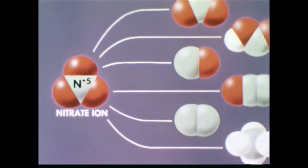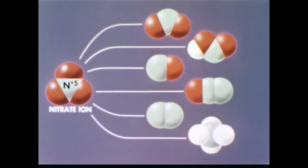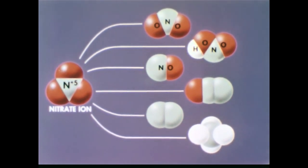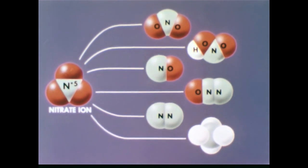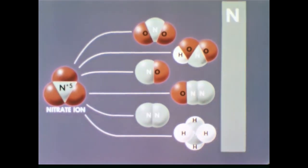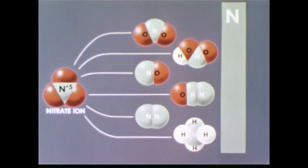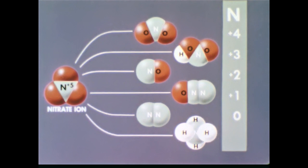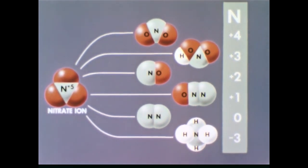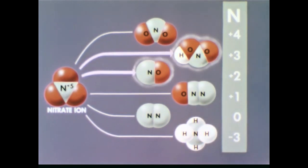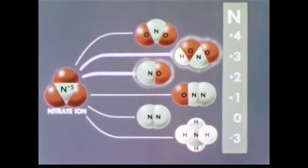Nitric acid in water solution exists largely as hydronium and nitrate ions. In both nitric acid and the nitrate ion, the nitrogen atom has an oxidation state of +5. It can be reduced to a number of products such as NO2, HNO2, NO, N2O, N2, NH4+, and many others. The nitrogen in these products ranges in oxidation state from +4 to −3. In most nitric acid reactions, several of these products form, but usually one reaction predominates.